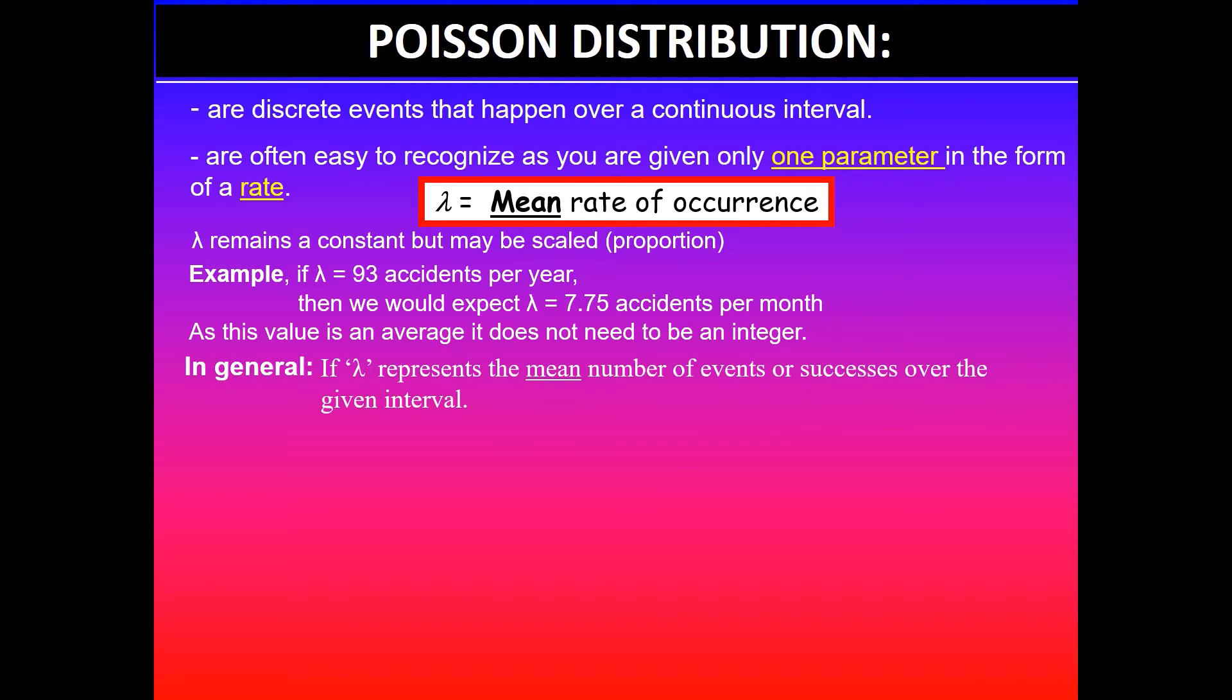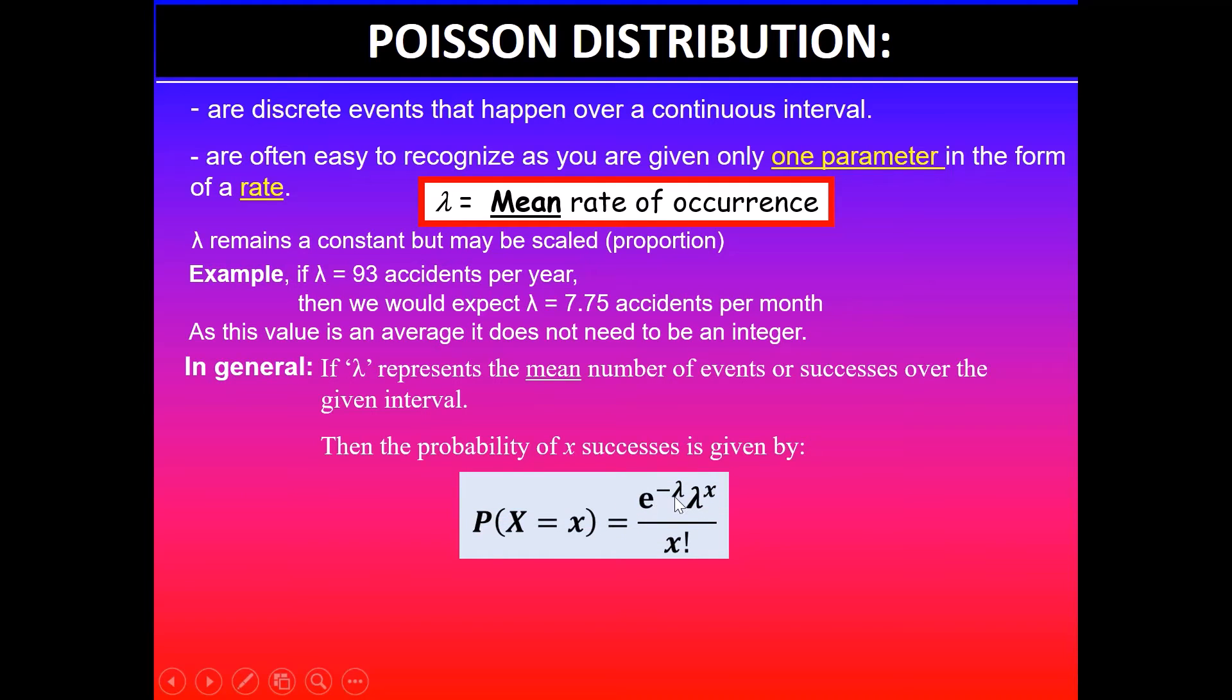In general, if lambda represents the mean number of events or successes over a given interval, then the probability of x successes is given by P(X = x) = (e^-λ × λ^x) / x! where x ∈ {0, 1, 2, 3, ...}, all the discrete values starting from 0, and e equals 2.718, which is the natural logarithmic base.